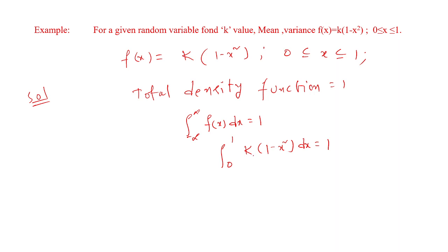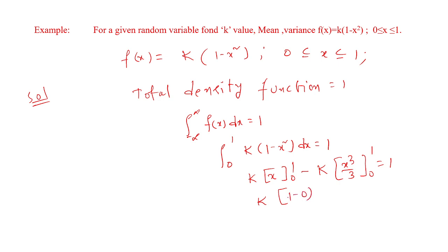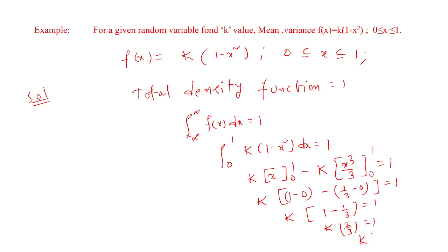So: k times the integral from 0 to 1 of (1 - x²) dx = 1. Taking k outside: integration of 1 is x from 0 to 1, minus integration of x² is x³/3 from 0 to 1. This gives k times (1 - 0) minus (1/3 - 0) = 1, so k times (1 - 1/3) = 1, giving k times 2/3 = 1, therefore k = 3/2.